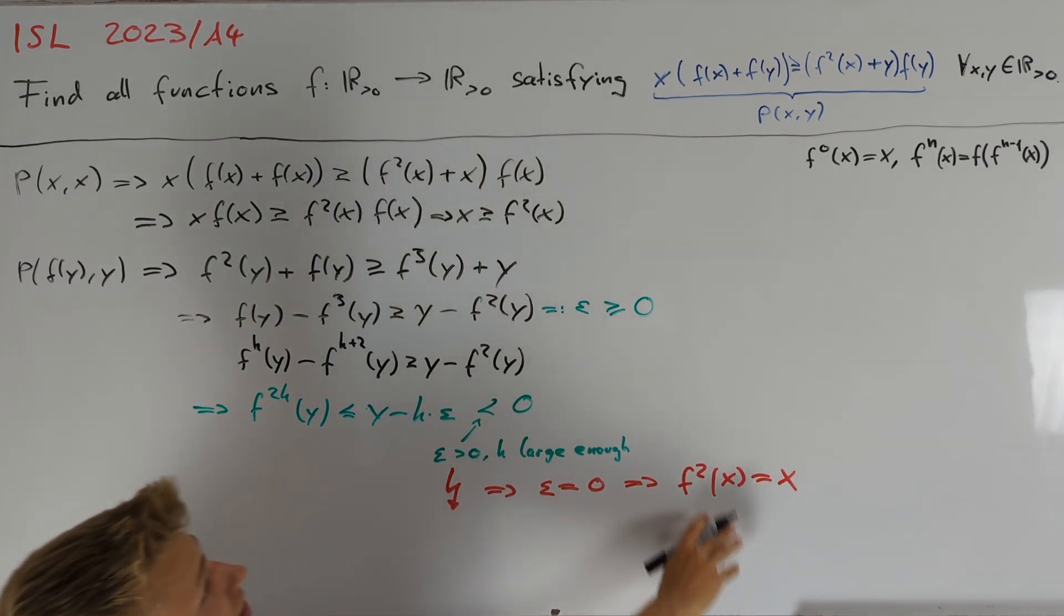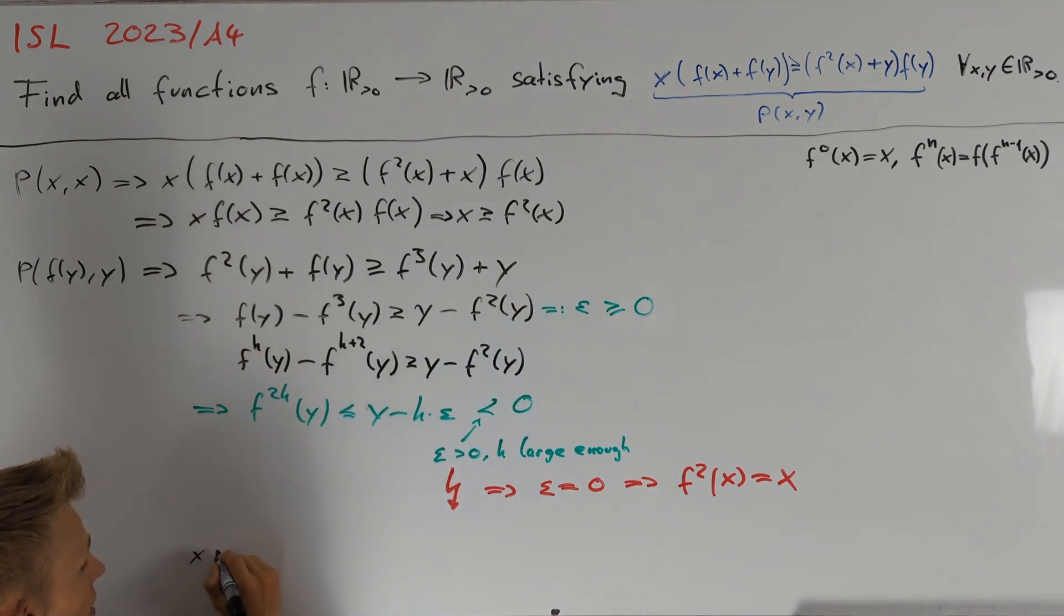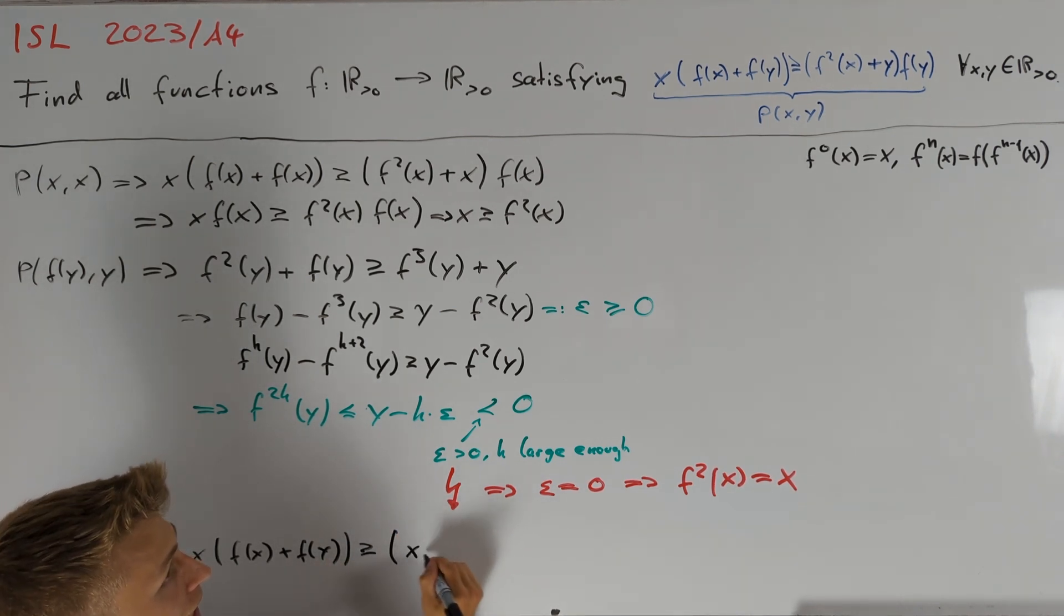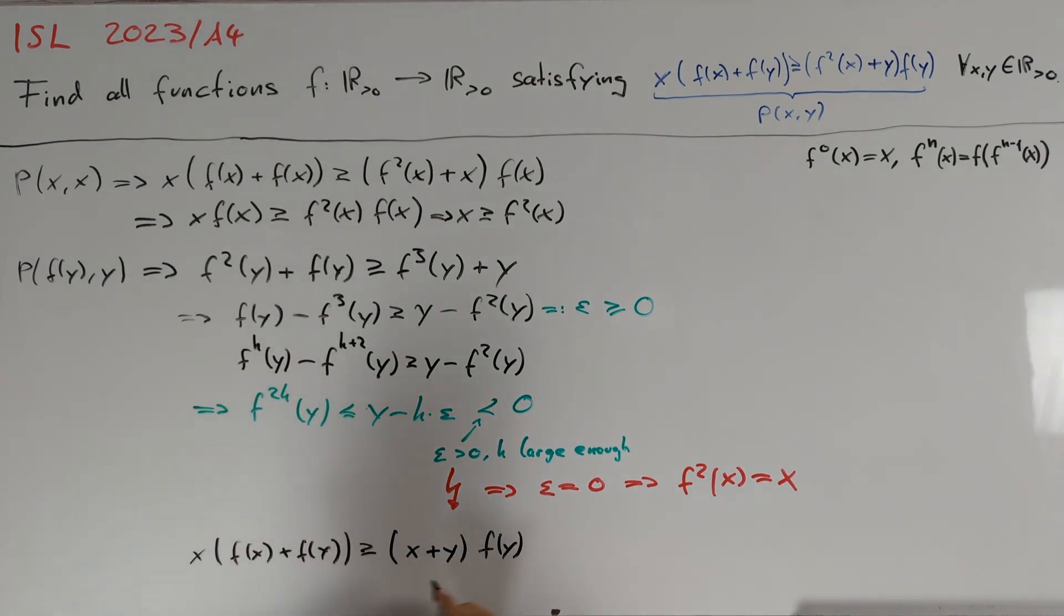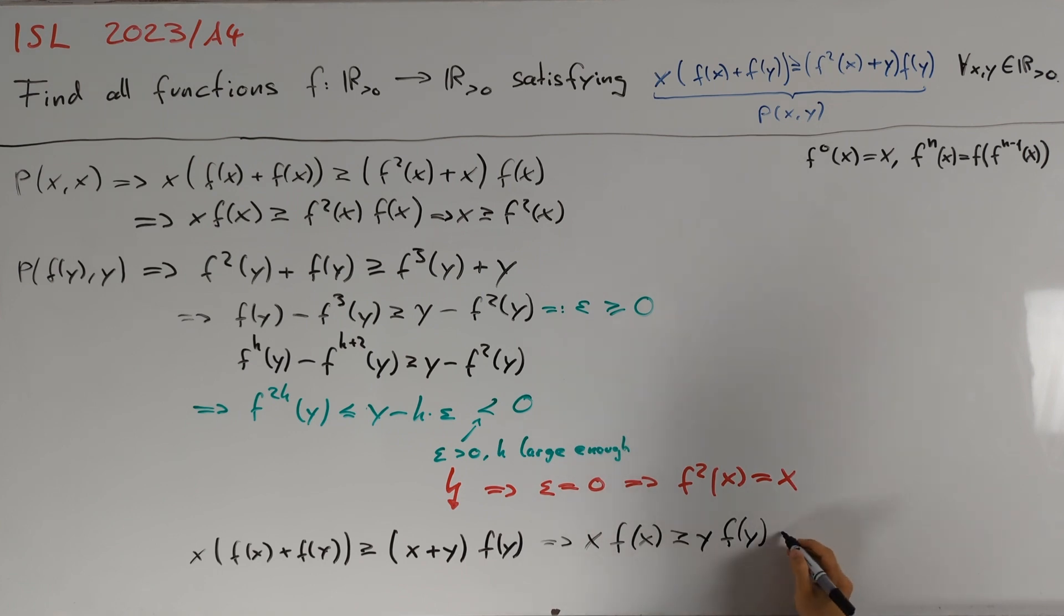And we can conclude that epsilon is equal to 0, or in other words f²(x) is equal to x. This simplifies our functional inequality to x times f(x) plus f(y) is greater than or equal to x plus y times f(y), where we can subtract x times f(y) to get that x times f(x) is greater than or equal to y times f(y). Swapping x and y gives the same inequality the other way around and therefore we must have equality and can conclude that x times f(x) is equal to y times f(y).